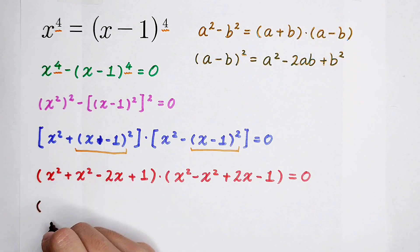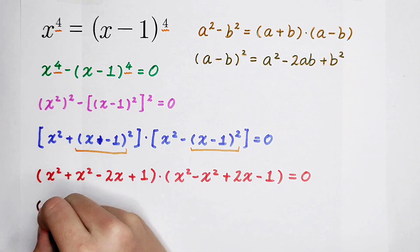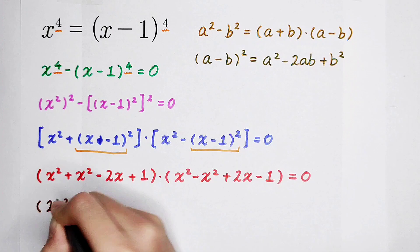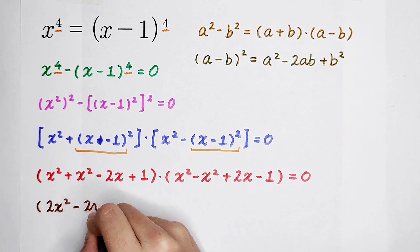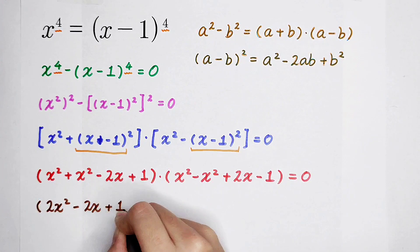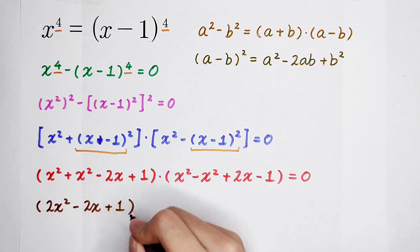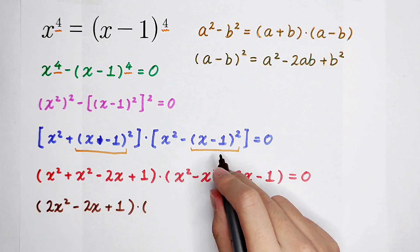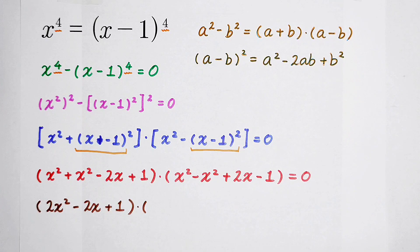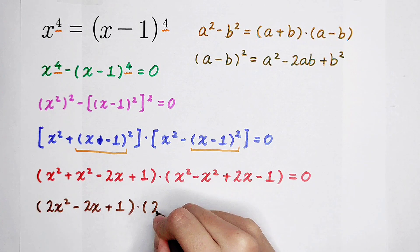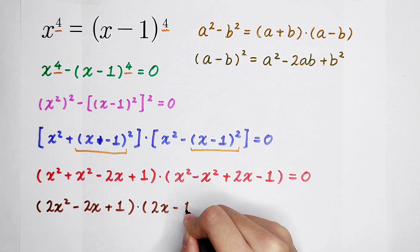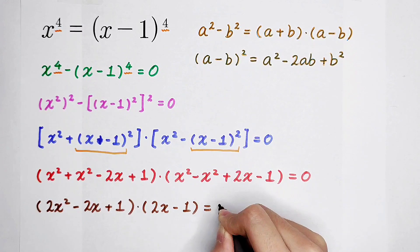And here is 2x squared minus 2x plus 1 in this bracket, and then times x squared minus x squared is 0, then plus 2x minus 1 is equal to 0.